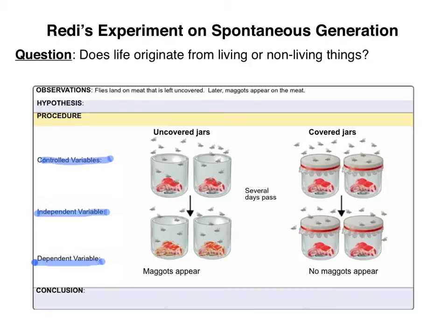How about the positive control? This one's going to be a little bit trickier in the case of the Redi experiment. Is there an experimental setup that Redi could have used to guarantee that he would have seen maggots appear on the meat? What I'd like you to do is take a minute and think about an experimental setup that Redi could have set up to maximize the probability of obtaining a positive control — that is, an experimental setup where you expect there to be a change in the dependent variable.